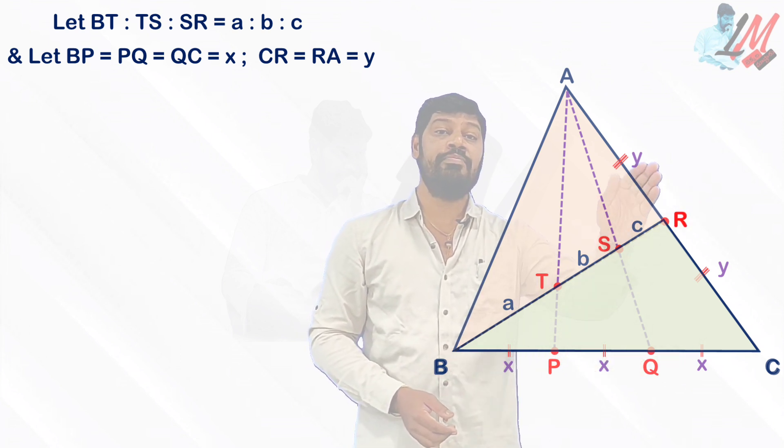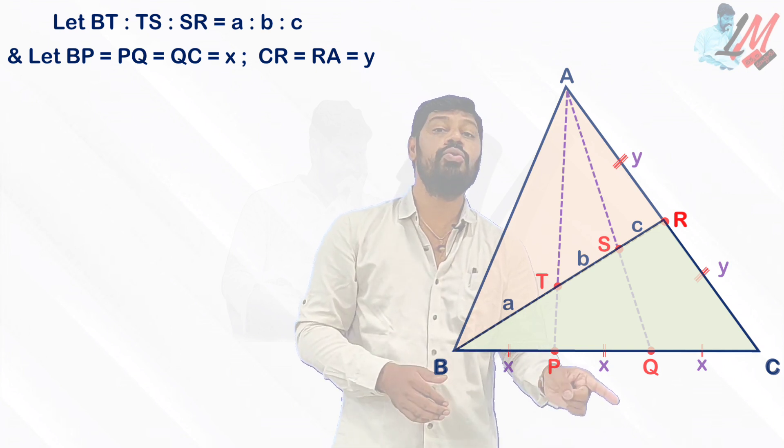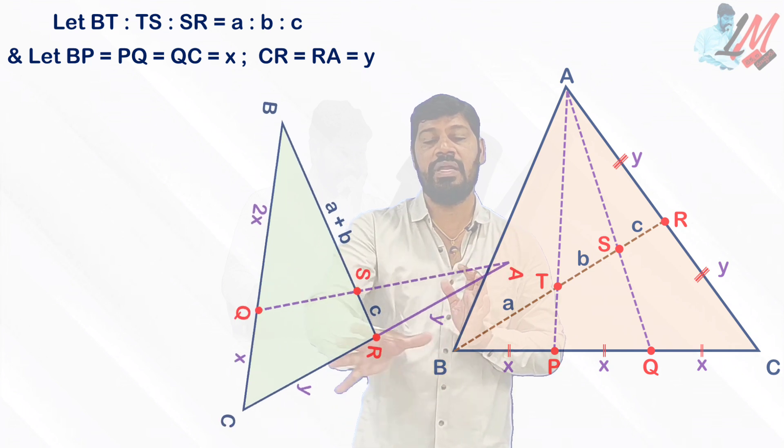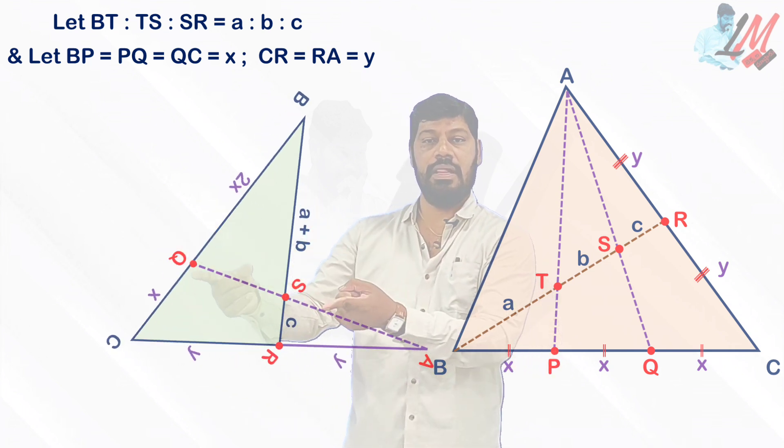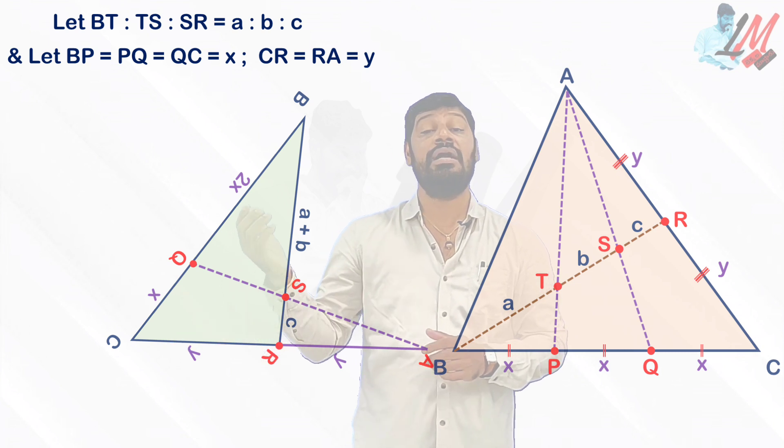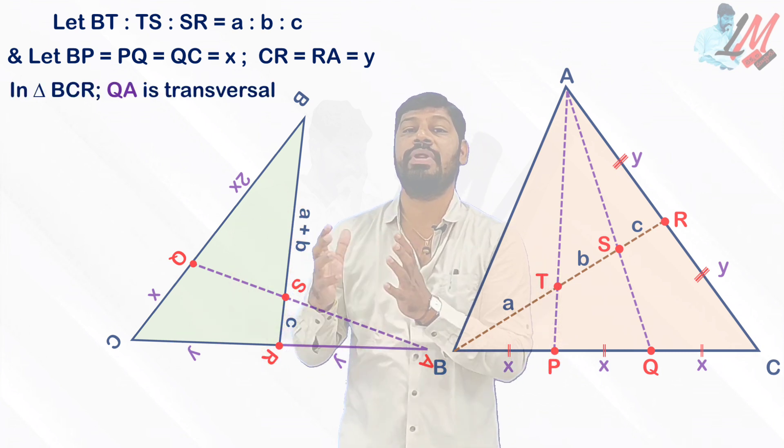So now if you have a look, there are so many different triangles in this particular triangle, but observe carefully I am considering triangle BRC. For this triangle BRC, first of all let me consider QA as a transversal.